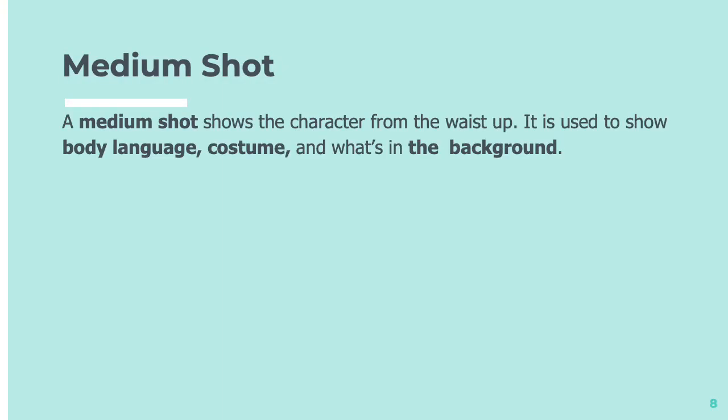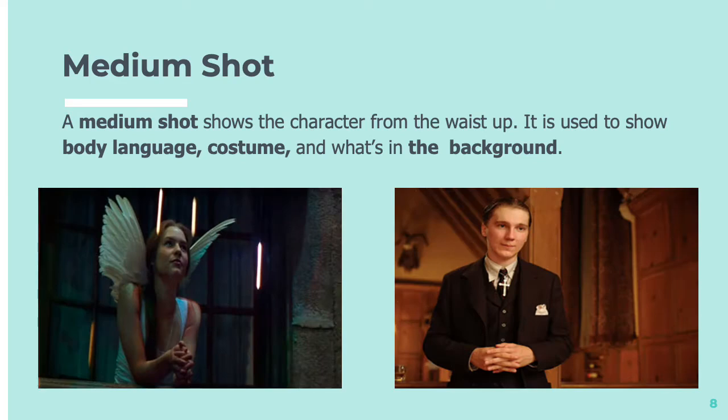Then we have a medium shot. A medium shot shows the character from the waist up and it's used to show body language, costume, and also what's in the background. There we've got some examples. You can see just these characters from the waist up and a little bit of the setting there as well.